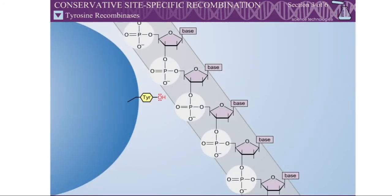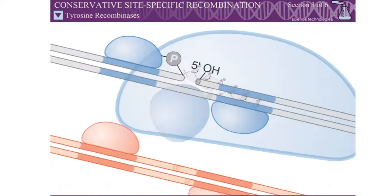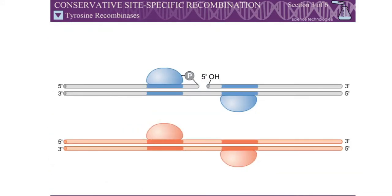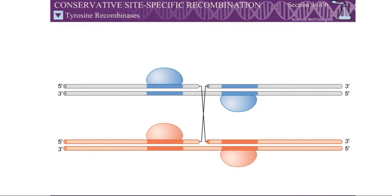The mechanism of action of the tyrosine recombinases is very similar to that of the serine recombinases, except a tyrosine side chain is involved in the cleavage reaction rather than a serine side chain. In contrast to the serine recombinases, the tyrosine recombinases cleave and rejoin two DNA strands first, generating a Holliday junction. The other two tyrosine recombinases then cleave and rejoin the other two DNA strands, resolving the Holliday junction.